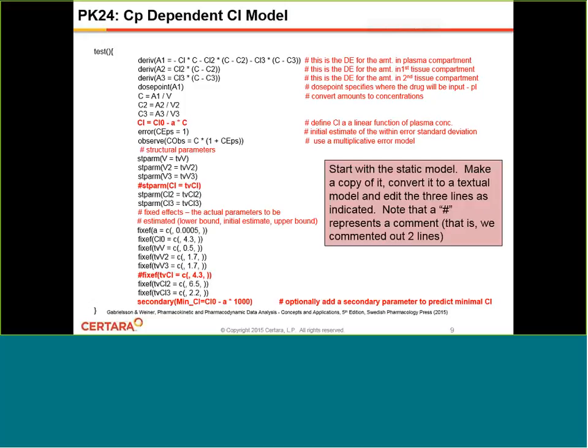And then lastly, one of the nice features in the PML language is the ability to define functions of the fixed effects that you're interested in, and we call those secondary parameters. So here, for example, the way we've modeled clearance, it decreases as a function of plasma concentration. And if we had gone back and looked at a plot of the data, the maximum plasma concentration is around 100. So I then estimated as a secondary parameter, what is the smallest clearance that we would expect to see over the course of this profile? And that would be the baseline clearance CL0 minus the slope times 100. And in a minute, when we look at the demo, I'll show you where to find that type of output. Also note that the hash mark or pound statement can signify that you're using comments, and anything that appears after that hash statement then becomes a comment in the code.